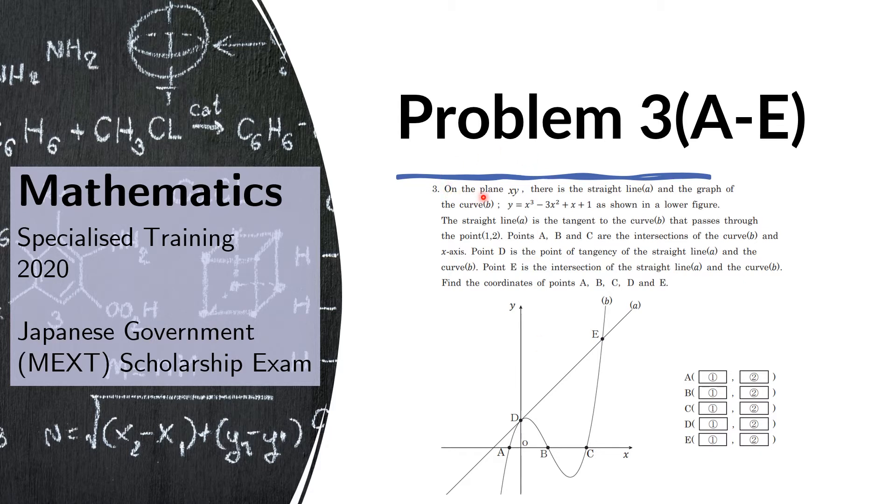Problem 3. On the plane XY, there is the straight line A and the graph of the curve B, Y equals X cubed minus 3X squared plus X plus 1, as shown in the lower figure. The straight line A is the tangent to the curve B that passes through the point (1, 2). Points A, B, and C are the intersections of the curve B and the X axis. Point D is the point of tangency of the straight line A and the curve B. Point E is the intersection of the straight line A and the curve B. Find the coordinates of the points A, B, C, D, and E.